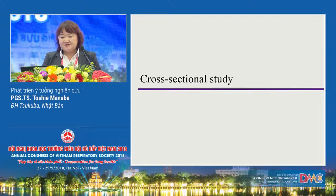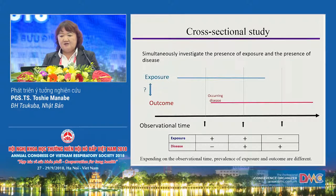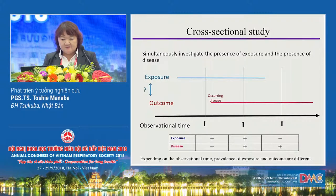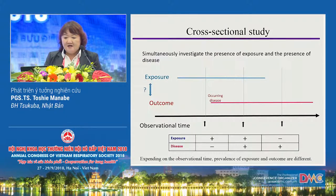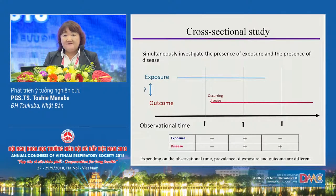The cross-sectional study examines subjects at one single point in time. It depends on the time of examination — exposure and disease can vary. The number of exposure and disease are different depending on the time point, so the time point is very much important.